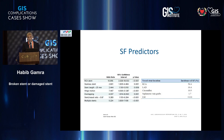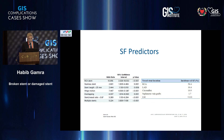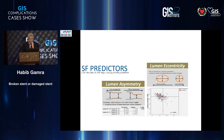What are the predictors? The RCA seems to be the most frequent location for such complications, but we also have to remember stent length, multiple stents, overlapping, and bending of the stent as predictors of stent fracture. Luminal eccentricity, or luminal asymmetry, is also a predictor, because the pulsatile forces can deform the stent.